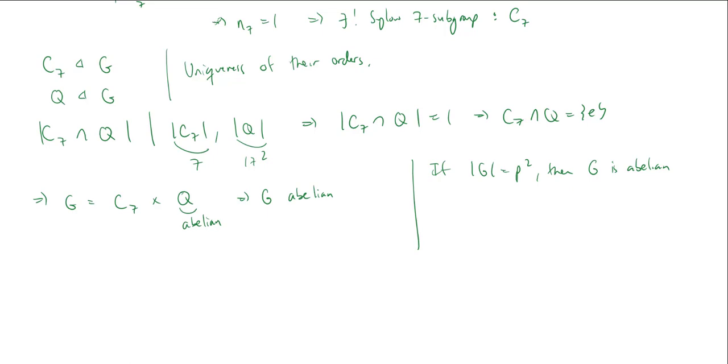we know by the finite abelian group theorem, or fundamental theorem of finite abelian groups, that there's really only a couple of options for Q. So Q, which has order 17 squared, we know that Q is either going to be isomorphic to C_17 cross C_17, or Q is isomorphic to the cyclic group of order 289. That's it. That's the only way you can get 289. We just use the prime factorization.